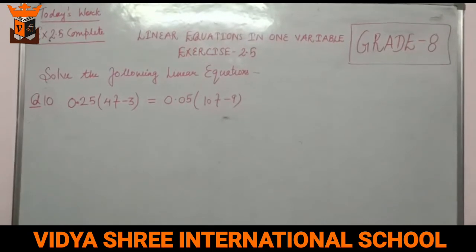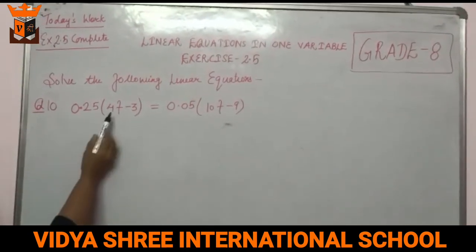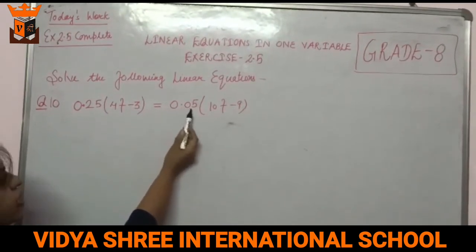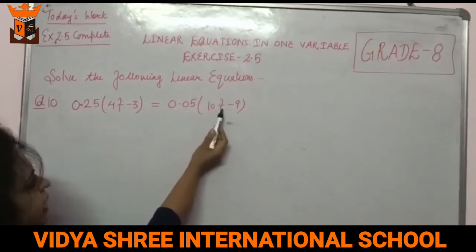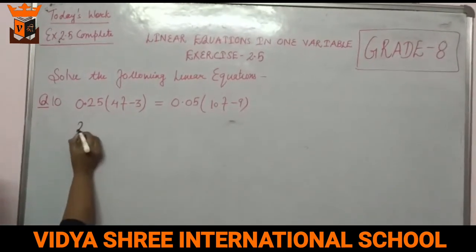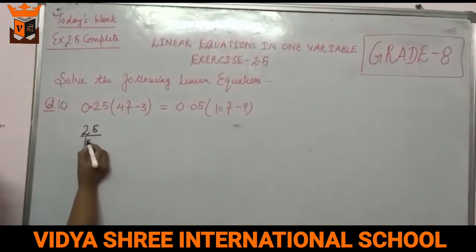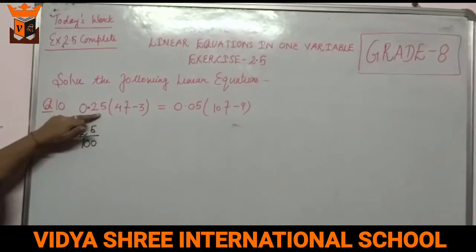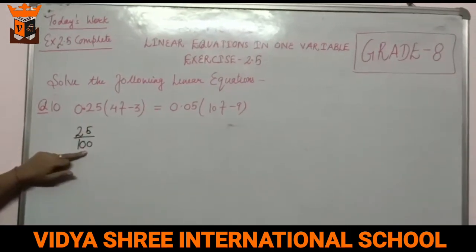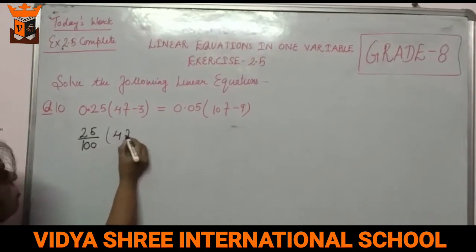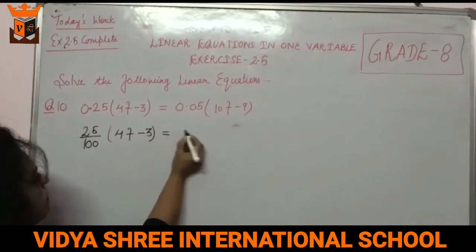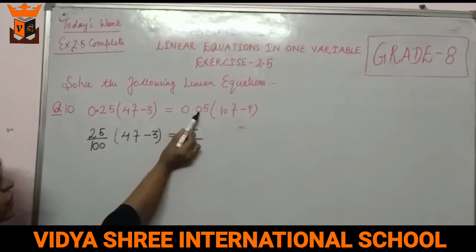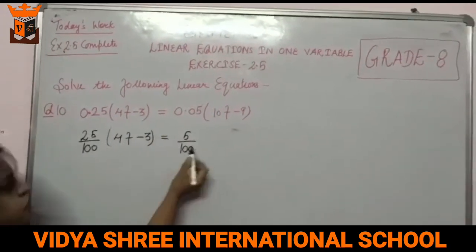Now this is question number 10: 0.25(4F minus 3) equals 0.05(10F minus 9). To remove decimals, multiply by 100 since there are 2 digits after the decimal point. This gives 25/100 times (4F minus 3) equals 5/100 times (10F minus 9).